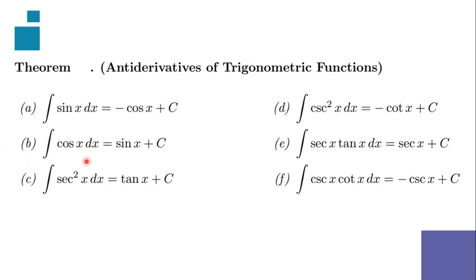For letter B, the integration of cosine x dx is equal to sine x plus C. For the integration of secant squared x dx, that's equal to tangent x plus C. And for the integration of cosecant squared x dx, it's equal to negative cotangent x plus C. Please familiarize again these six theorems for integrating trigonometric functions.